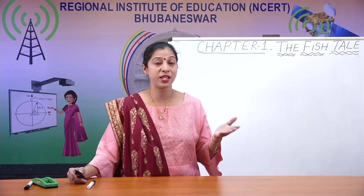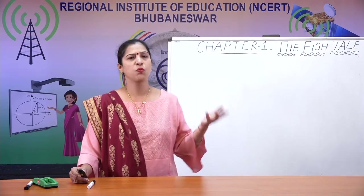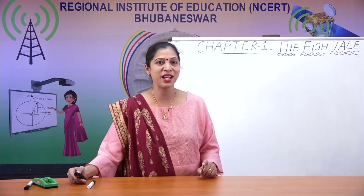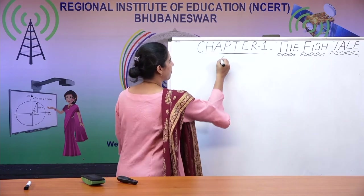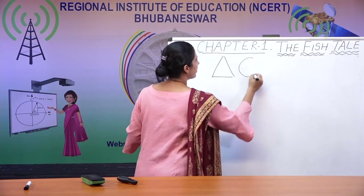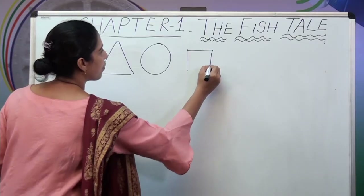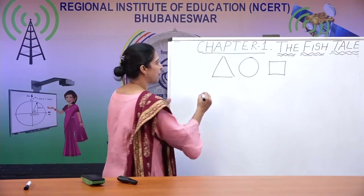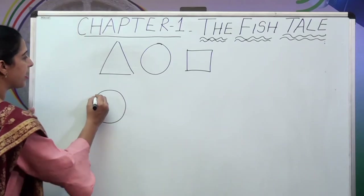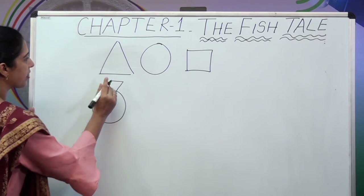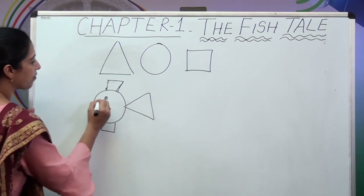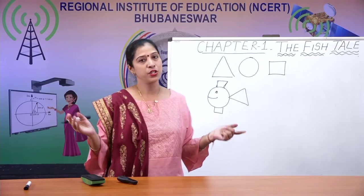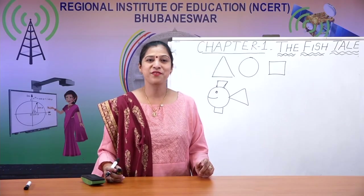Tangram shapes are used to make humans, houses, dogs, and whatnot. On the screen you can see different shapes used to make many types of fish. We can take one triangle, one circle, and one square to make a fish — just put a square here, another square here, and one triangle here. You can make your own — it is very, very interesting!